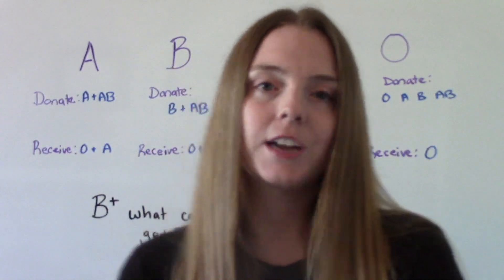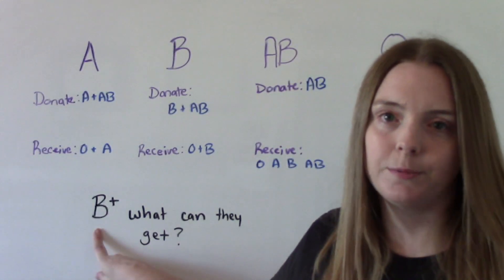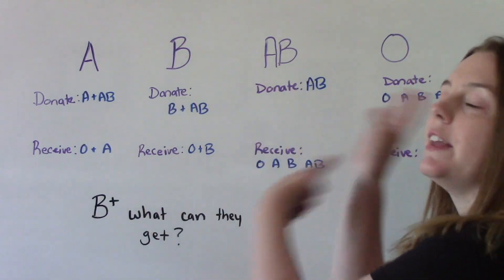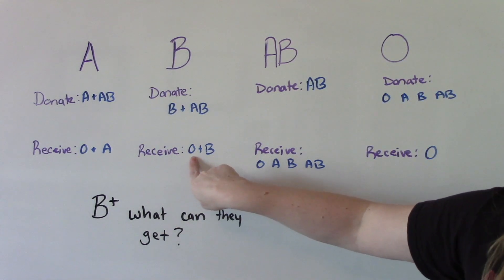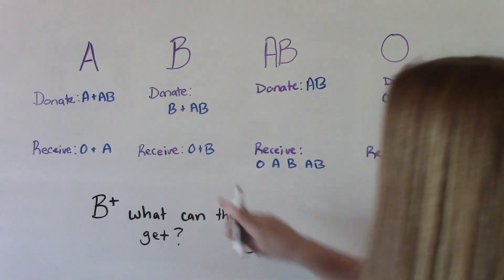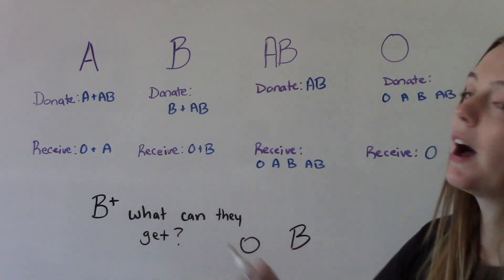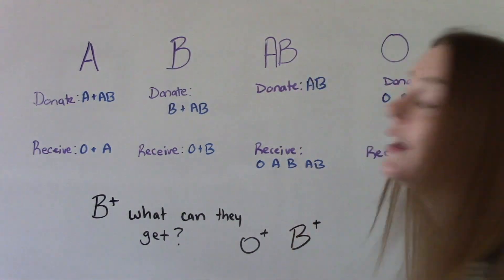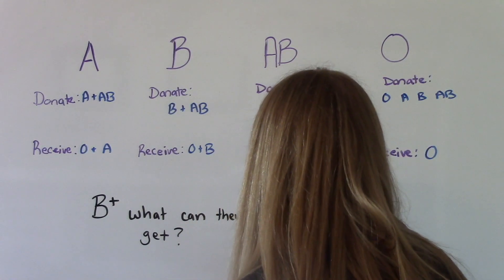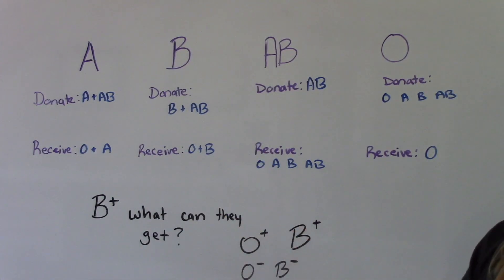A little practice question: if your patient is blood type B positive, what can they receive? Who can give them blood? Well, they can get blood from O and from B. And what about the Rh factor? They're positive, so people with a positive Rh factor can get both positive and negative blood. So this patient with B positive blood can get O positive, O negative, B positive, and B negative blood.